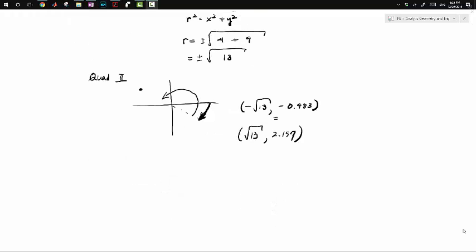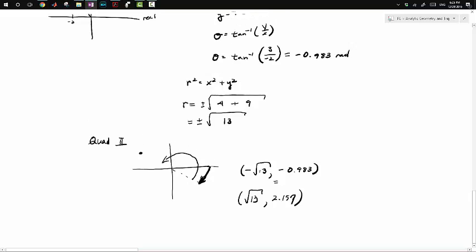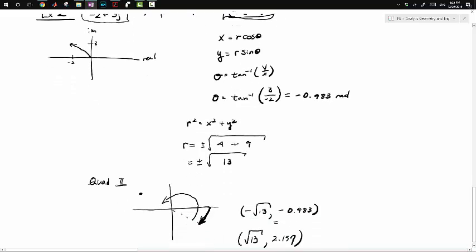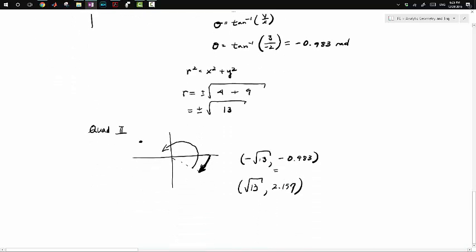To finish the problem, we still have to put it in the form R × e^(jθ). That will be √13 × e^(j×2.157). And that's our final answer.